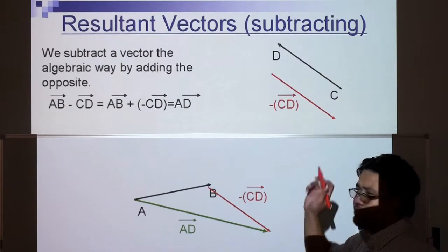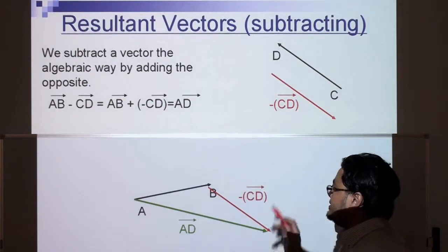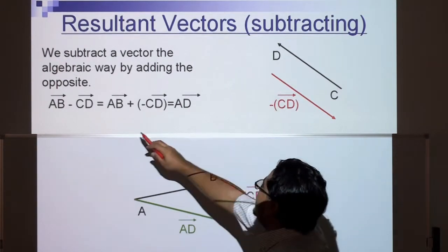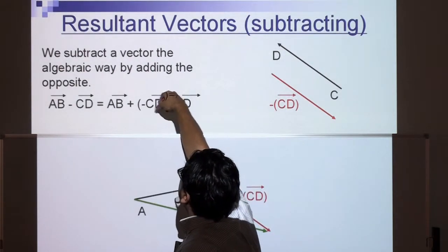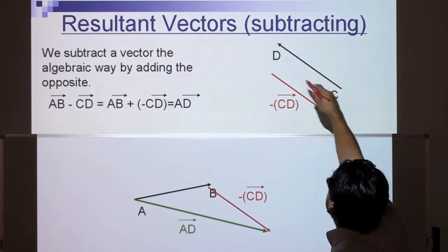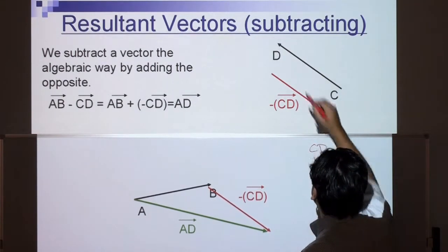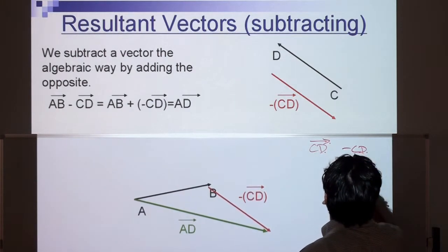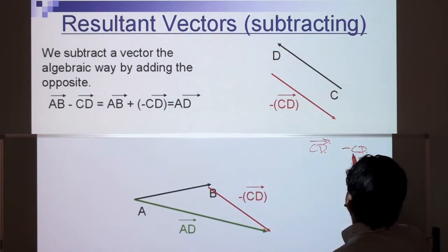Let's move on. Now the resultant vector in subtraction or subtracting: we subtract a vector the algebraic way by adding the opposite. So here look at this example: AB minus CD equals AB plus negative CD, which is equal to AD. So have a look at what we do here. CD, we have line CD. Notice that's the initial point. CD, now negative CD, all we do here is just change the direction. Instead of pointing that way, it points that way, then we call it negative CD.